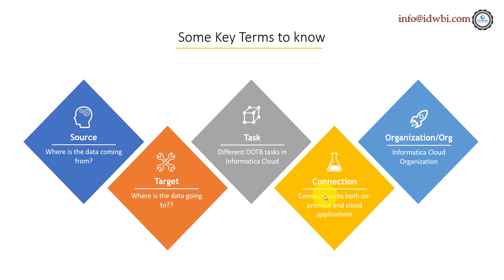Connection is the one which contains information used to connect to either your on-premise systems or your cloud-based systems. Organization, which we spoke about in detail in further lectures, is how Informatica Cloud identifies your connection — it is the name of your organization. You'll see different organization names throughout this course because I've used about three to four different free trial accounts to build it.